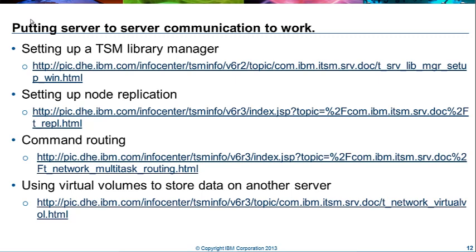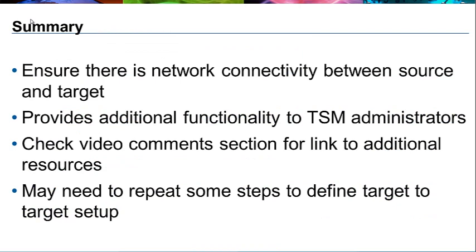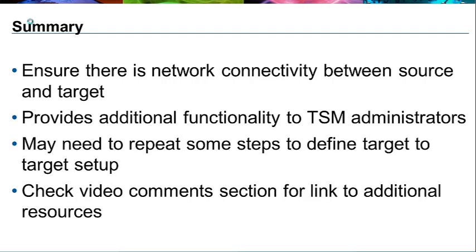These are just some examples of how server-to-server communication can be very useful. In summary: ensure there is network connectivity between source and target servers, as this relies on an IP network. Server-to-server communication provides additional functionality such as a library manager or node replication. To set up target-to-target communication, repeat the steps designating one target as a new source, turn cross-define on, and repeat all previous steps. Check the video comments for links to additional resources. Thank you very much for watching.